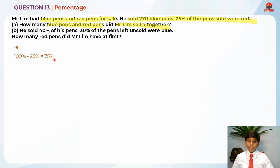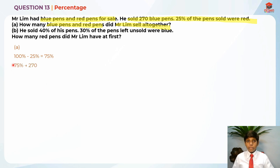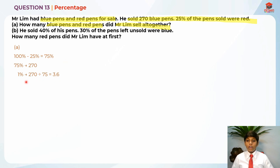So this 75% should refer to 270. So 270 is 75%. In order to find 1%, it's 270 divided by 75, which gives us 3.6. Now we can find 100% in order to find the total blue and red pens sold. So it's 3.6 times 100, which is 360.